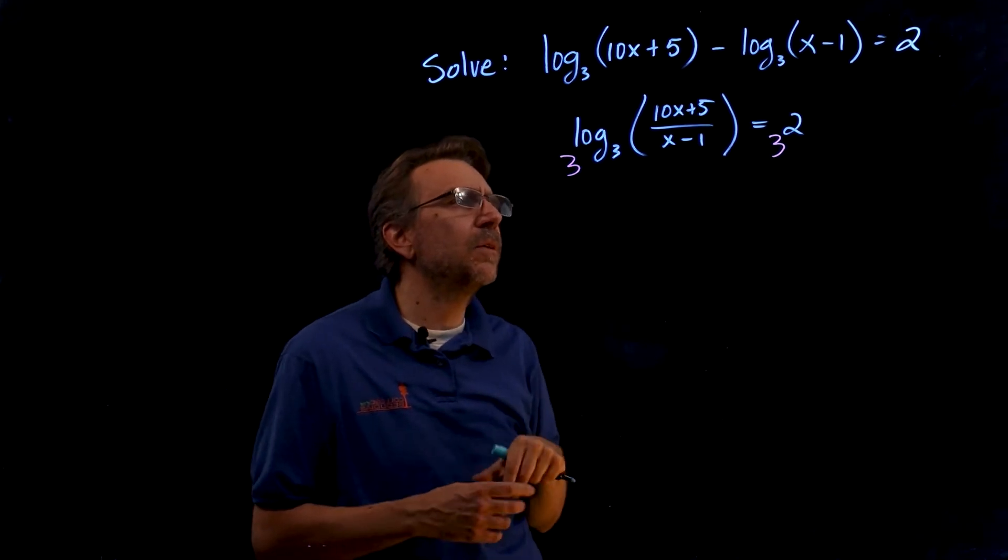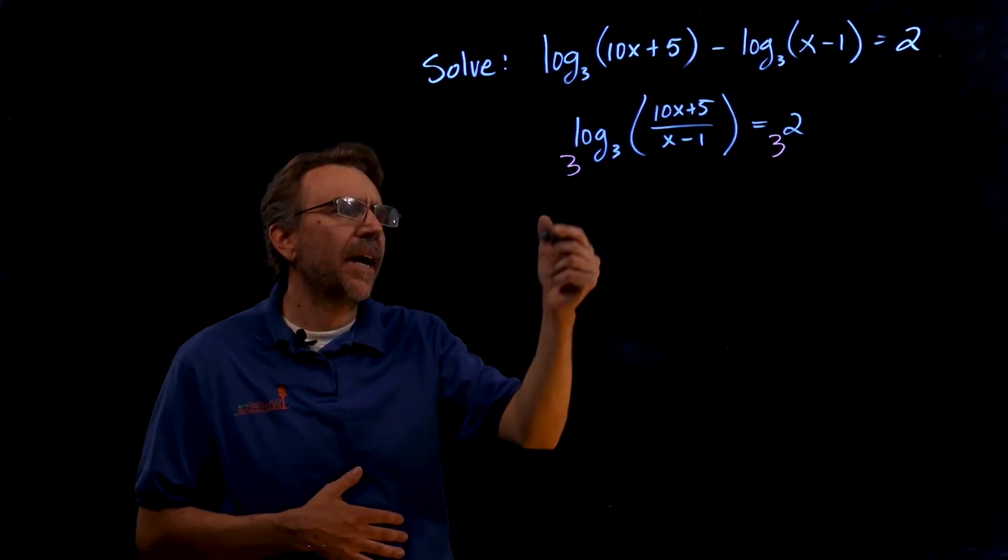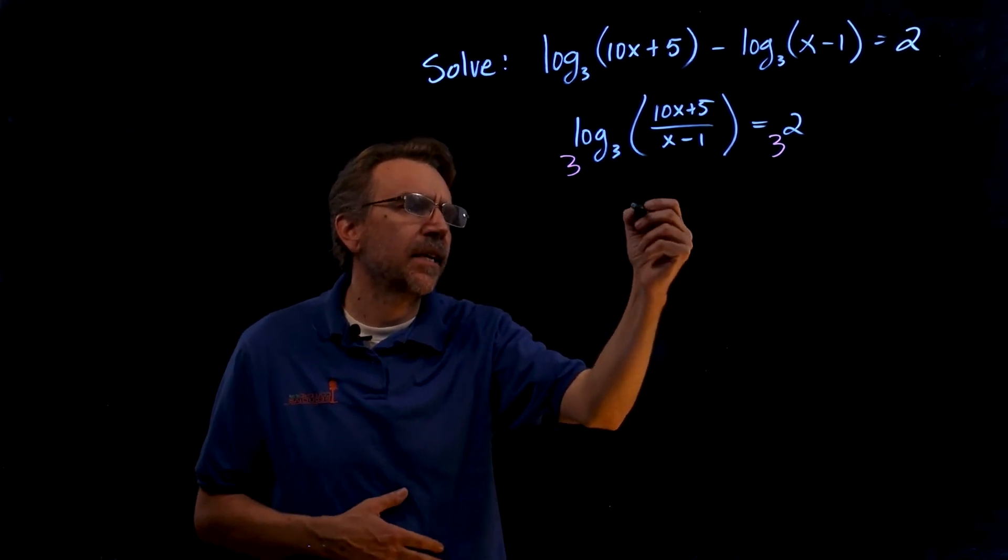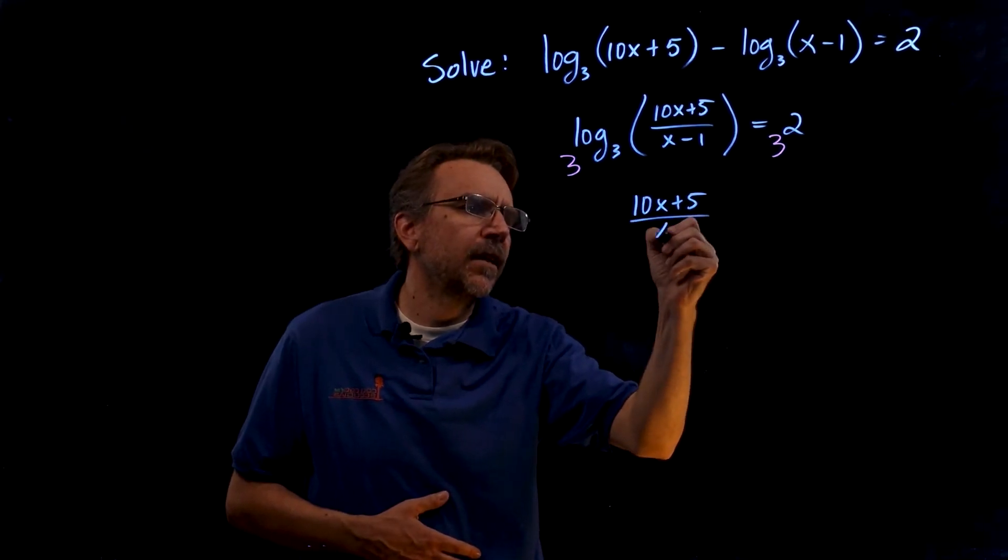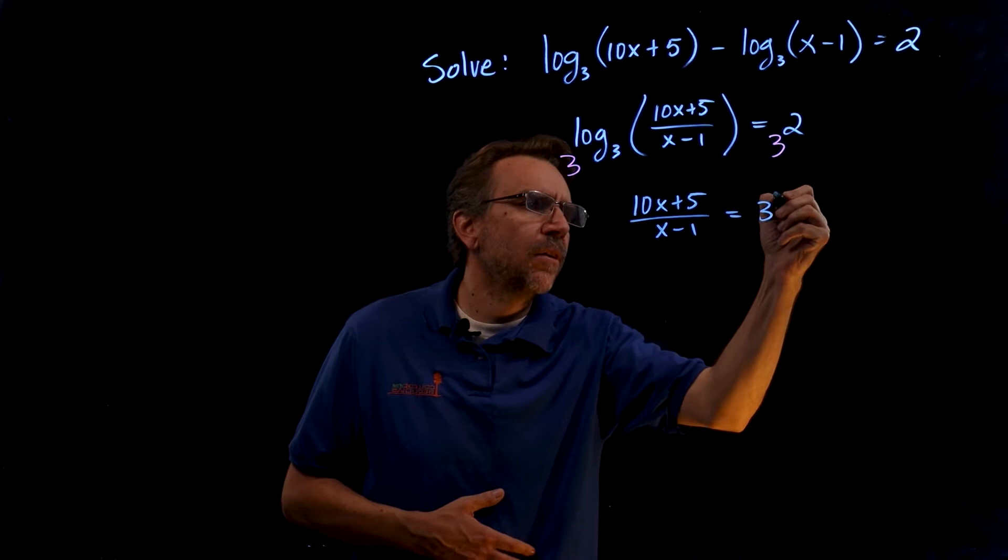So raising 3 to those both equal exponents we have, well 3 and log base 3 they kind of cancel and so I get 10x plus 5 over x minus 1 equals 3 squared.